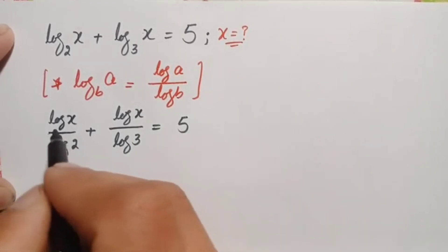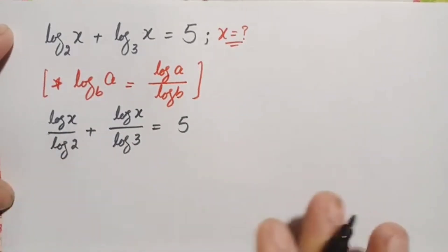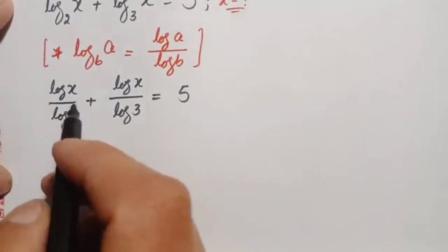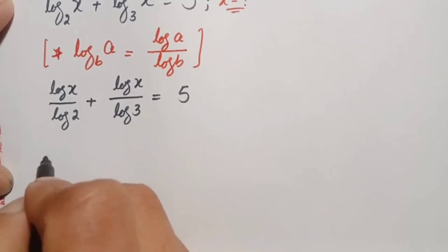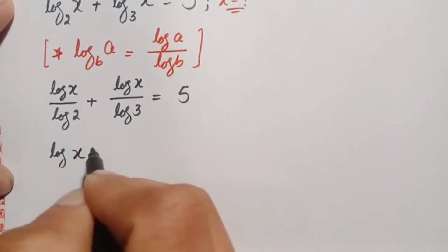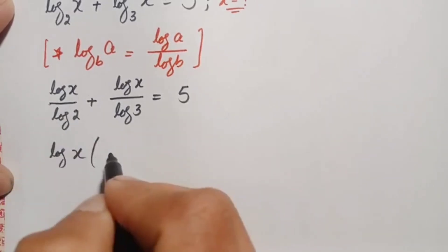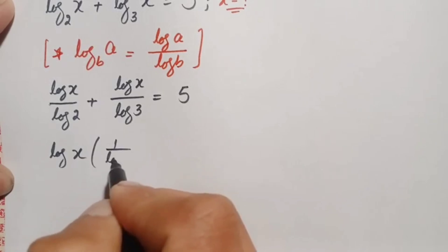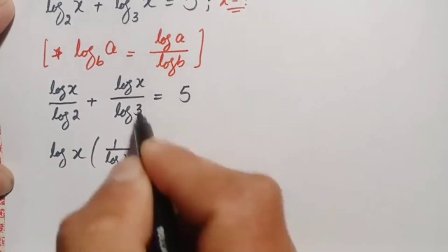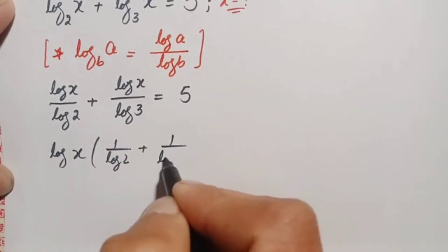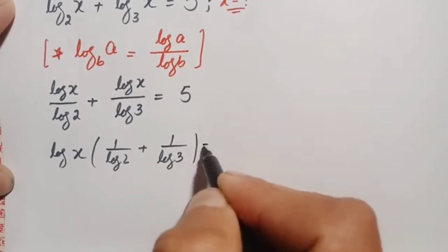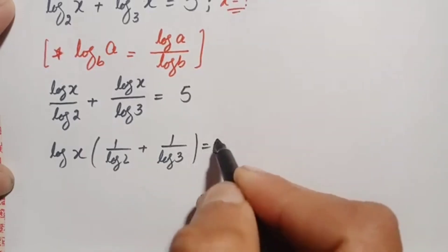On the left-hand side, log of x is common in the numerator, so we take log of x common. This becomes log of x times (1 over log of 2 plus 1 over log of 3) is equal to 5.